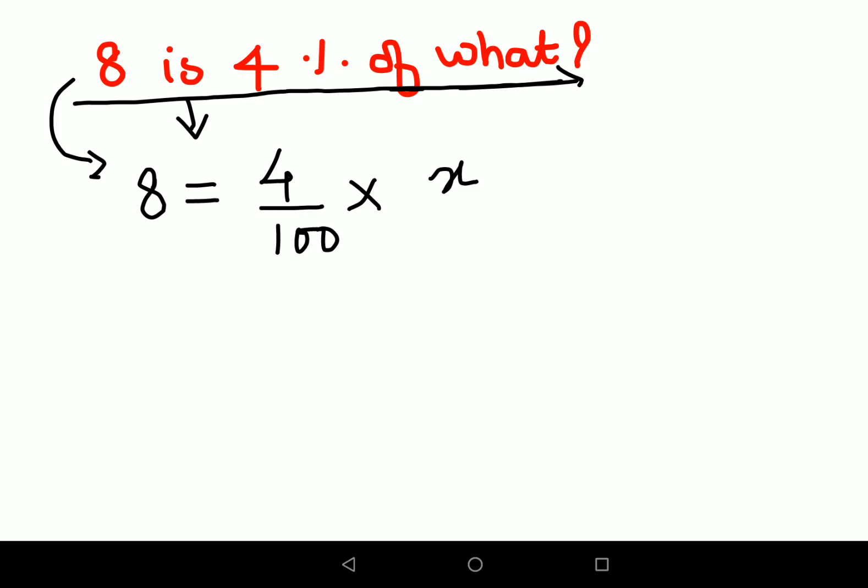Now in order to find the value of X, we will have to shift all the numbers on this side. So here we'll multiply by 100 on both sides. When I do that, my 100 and 100 is getting cancelled. And in order to get rid of this 4, we will divide by 4. So this 4 and this 4 is also cancelling.